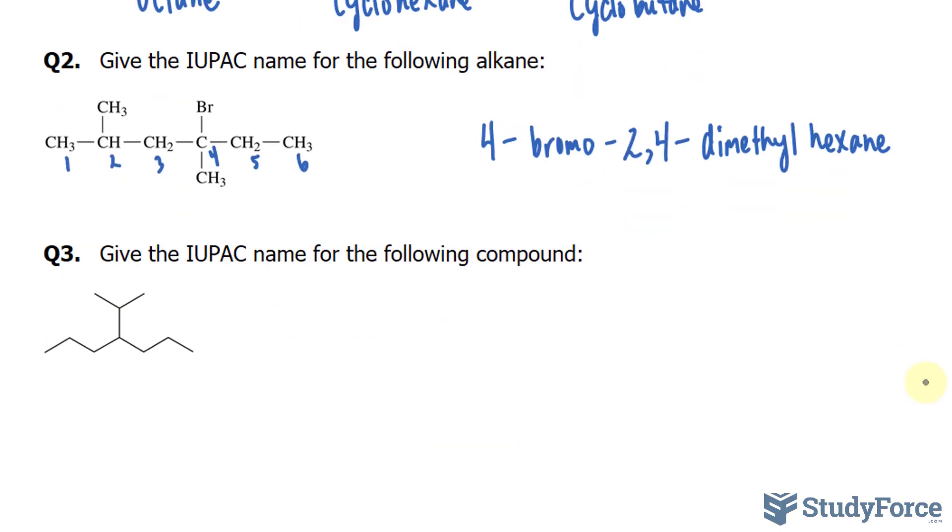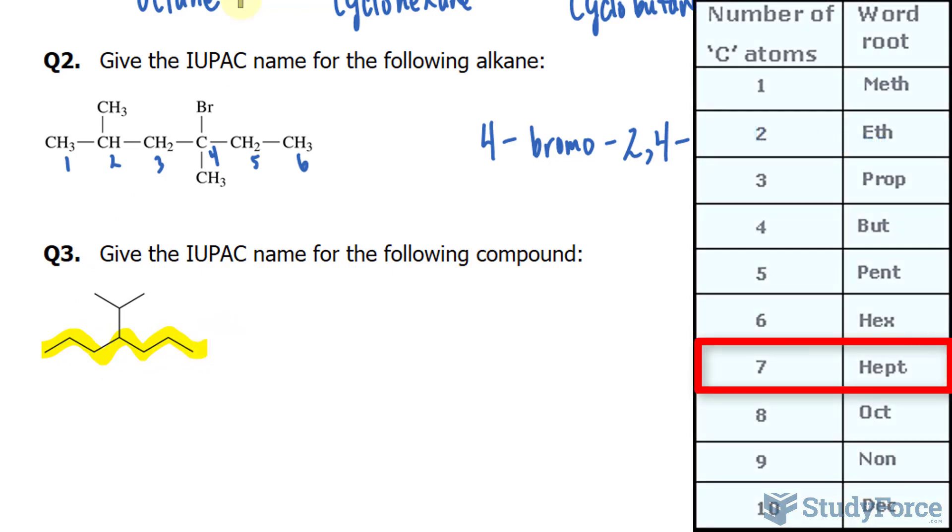Give the IUPAC name for the following compound. So let's see the longest carbon chain. We have this possibility: 1, 2, 3, 4, 5, 6, 7. We have 1, 2, 3, 4, 5, 6. So this is obviously the longest. 7 is heptane. So let me write that down. Heptane.